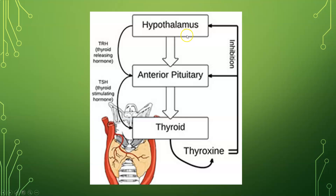As an example of a negative feedback loop: the hypothalamus produces TRH, which travels to the anterior pituitary and stimulates it to release TSH, which then travels to the thyroid and stimulates release of thyroxine (T4 and T3). As thyroxine levels in the blood increase, they inhibit the pituitary from releasing more TSH and the hypothalamus from releasing more TRH. As thyroxine levels drop, inhibition is lifted and the cycle begins again — a push-and-pull pattern cycling up and down.